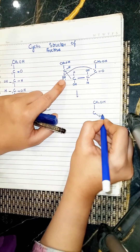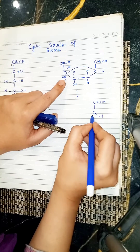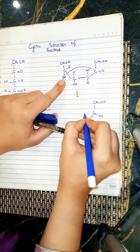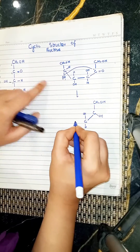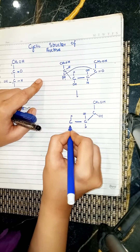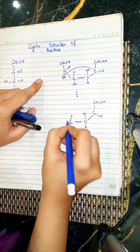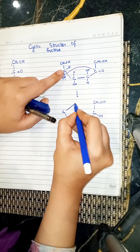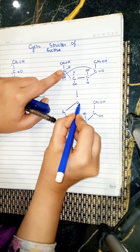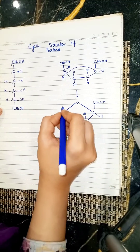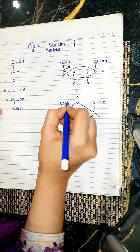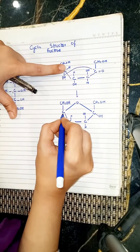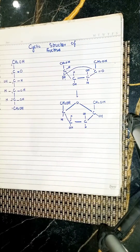The hydrogen reacts here with oxygen. Carbon number 3 has a hydroxyl group and a hydrogen. Carbon number 4 has a hydrogen and a hydroxyl group. Carbon number 5's oxygen forms a bond in the ring, and carbon number 6 is CH2OH.